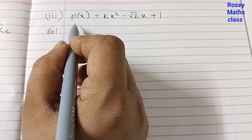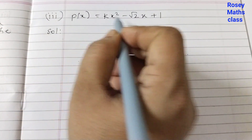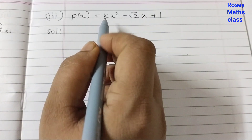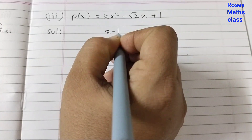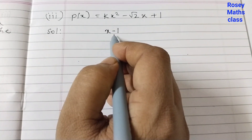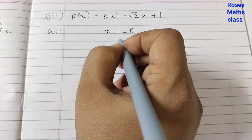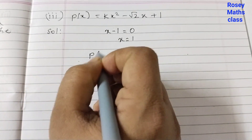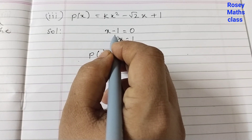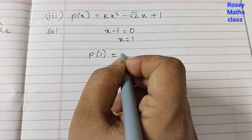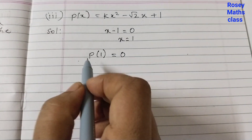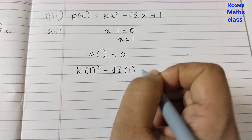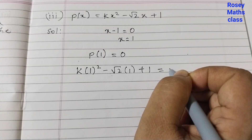Third part: p(x) equals kx squared minus root 2 times x plus 1. We need to find the value of k. It is given that x minus 1 is a factor of this polynomial. So set x minus 1 equal to 0, giving x equals 1. We need to find p of 1, and since x minus 1 is a factor, p of 1 must equal 0 according to the factor theorem.